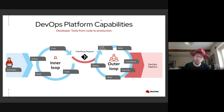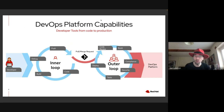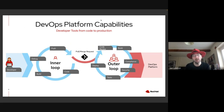At that point, the outer loop kicks in. What the outer loop does is process that code, generate the images, review it, build it, test for compliance, and apply security protocols. When it's satisfied with those, there's an automated process by which it's deployed to end systems.